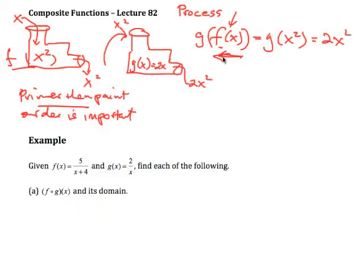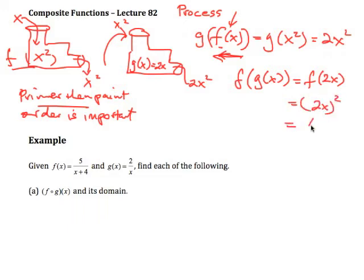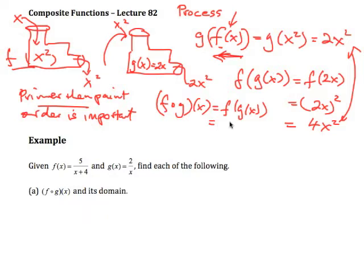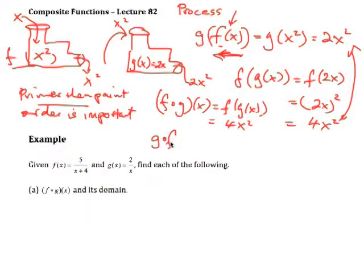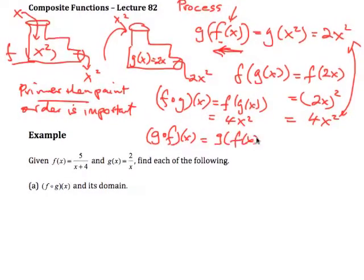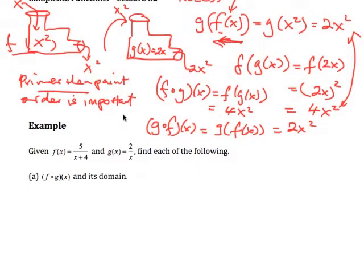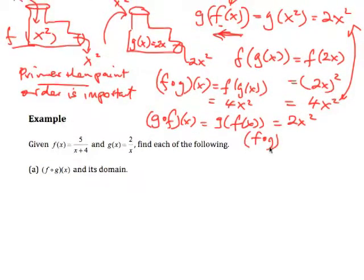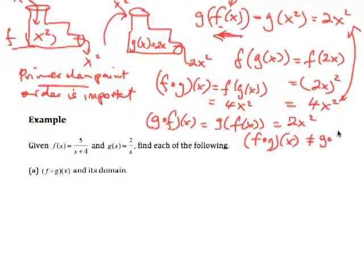That's the idea of a composite function — it's really an application of one function to the results of another function. Now that's different to f∘g(x), because g(x) is doubling it, so we're operating on 2x, and the squaring process gives us 4x squared. Notice that these two are not the same. So f∘g(x) is generally not equal to g∘f(x).